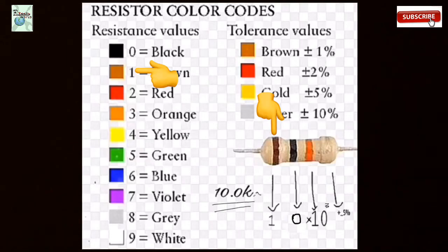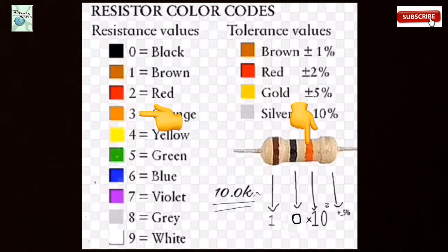brown color, the value is 1. Next color is black, the value is 0. And the next is orange. This third one, orange, is a multiplier: 10 to the power of 3.